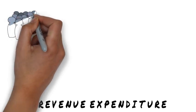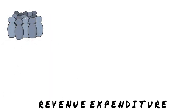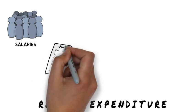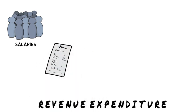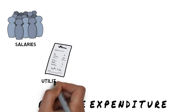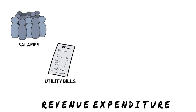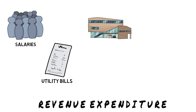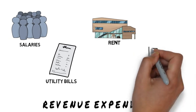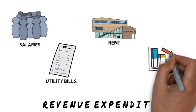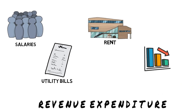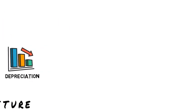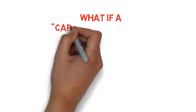Some examples of revenue expenditure include wages and salaries paid to staff, utility bills such as electricity, heat and light, or water bills for the premises, rental of premises whether factory or office, and depreciation charged on a non-current asset — all of these are part of revenue expenditure.